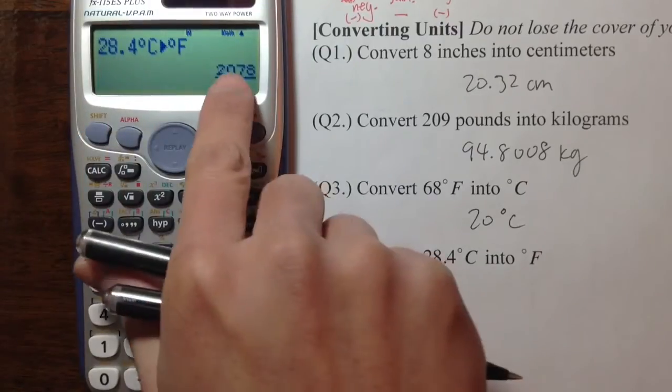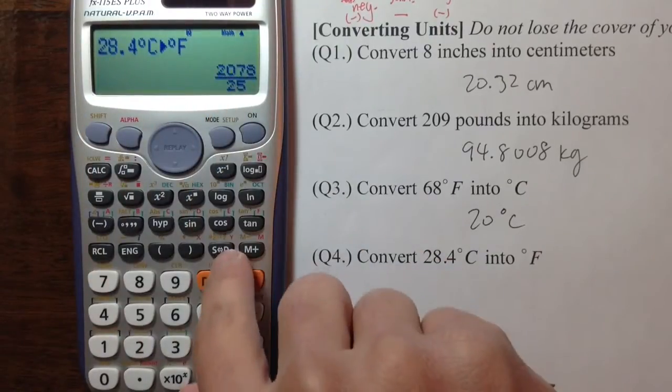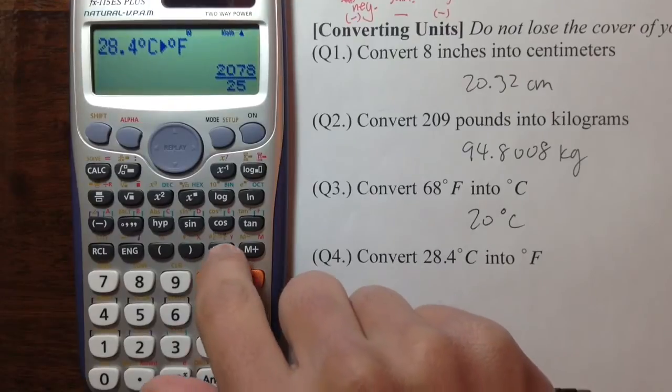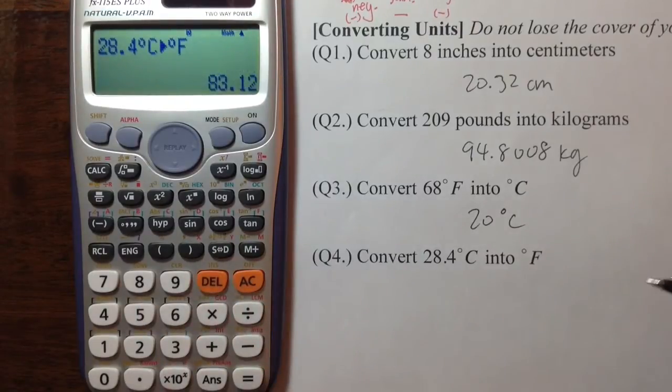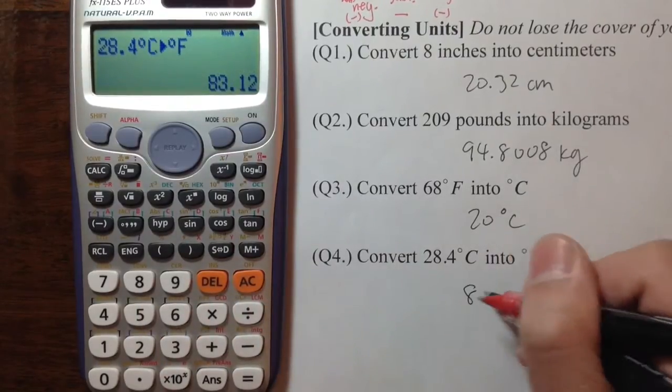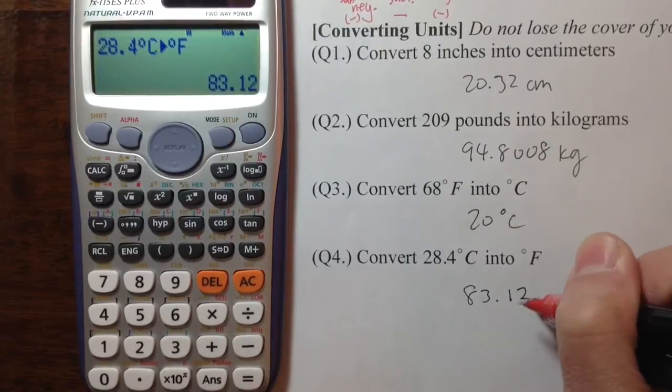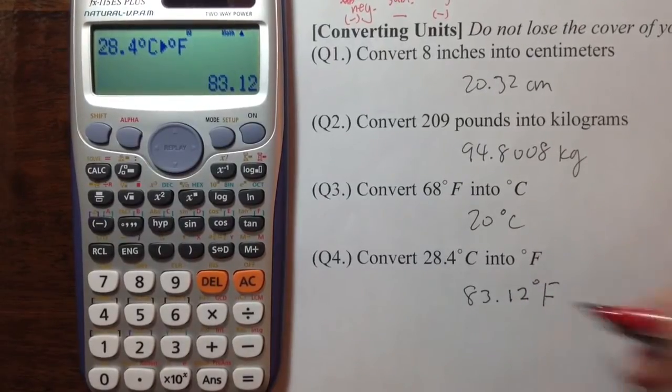And then equal, we get a fraction. It's okay. We just need to hit the S to D key. We get 83.12, so we have 83.12 degrees Fahrenheit.